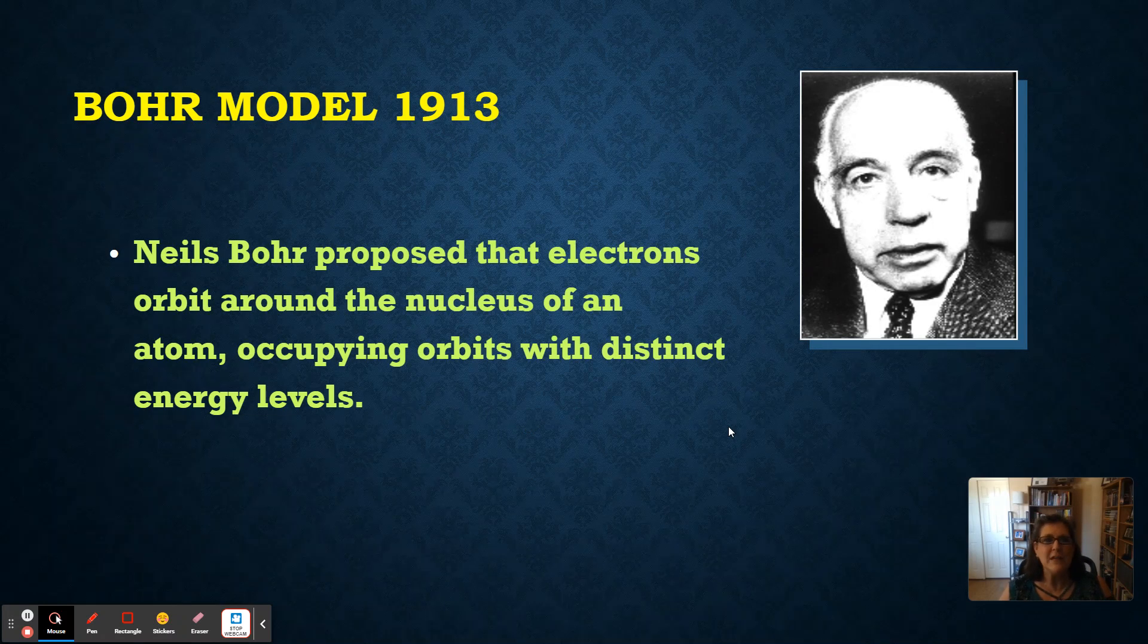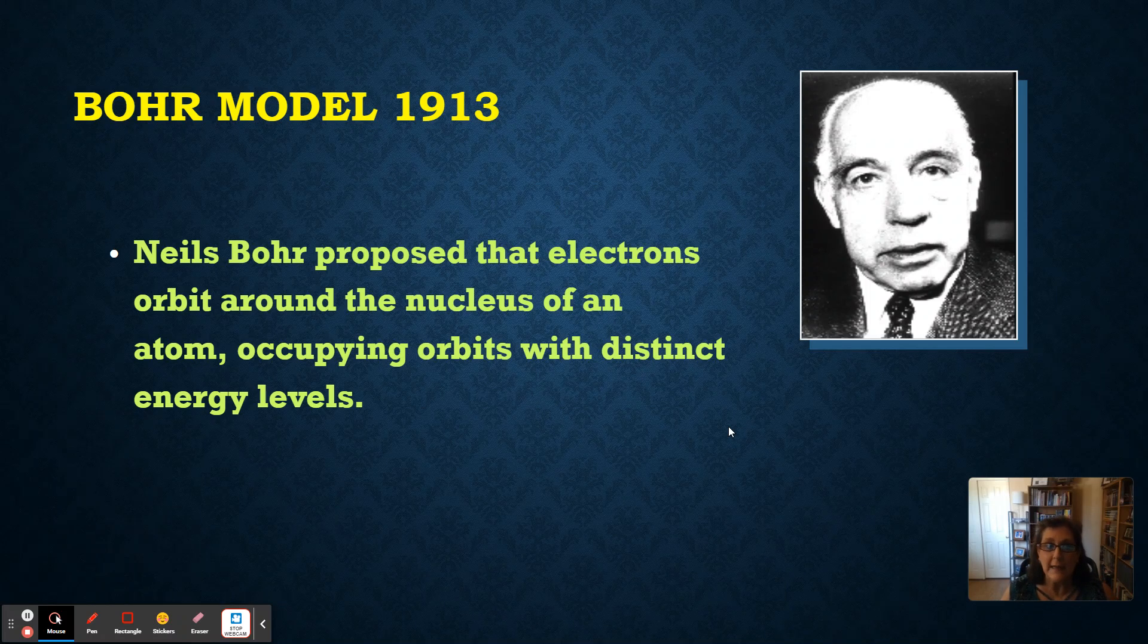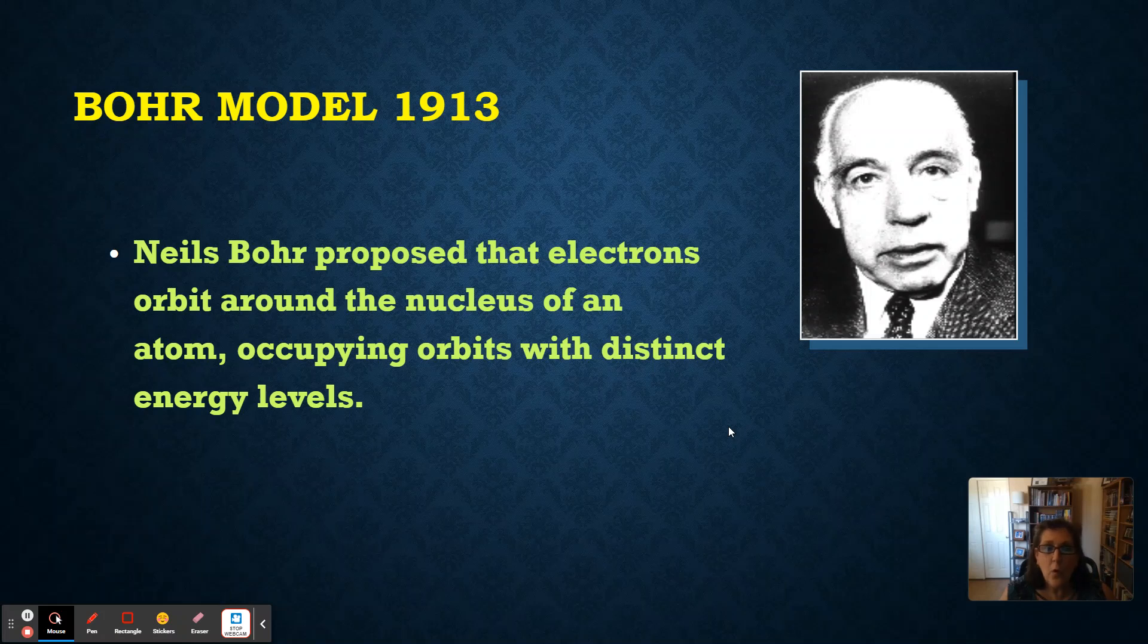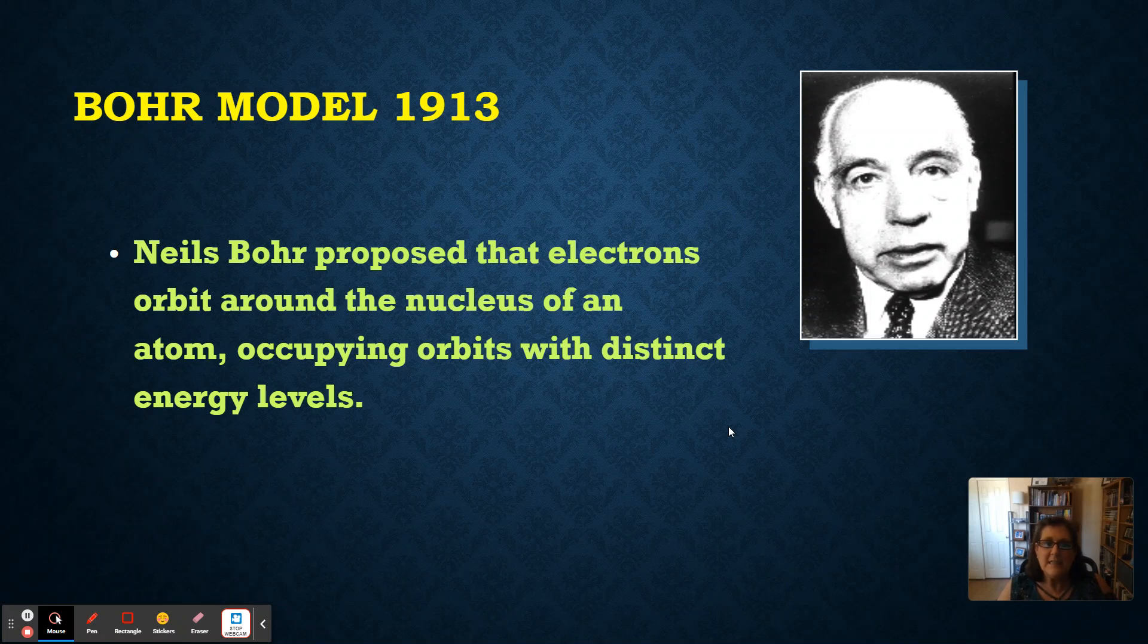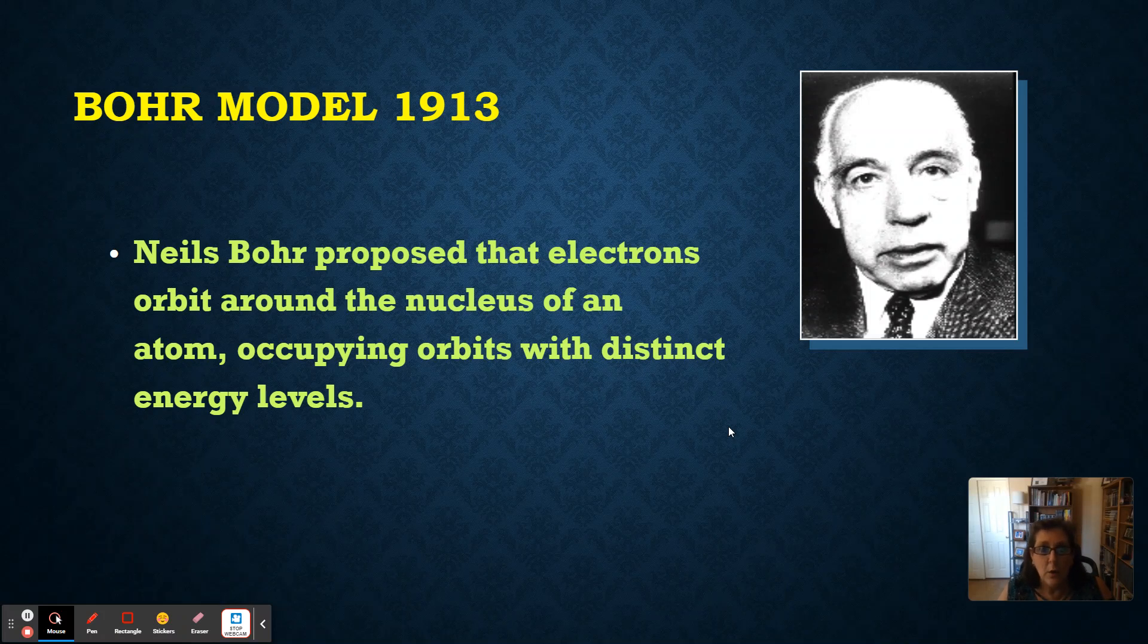All right, first up is a scientist, Niels Bohr. Niels Bohr decided that electrons go around the nucleus of an atom back in 1913, so over 100 years ago. He said that these electrons orbit at distinct distances from the nucleus. The nucleus, again, is where the protons and the neutrons are located.